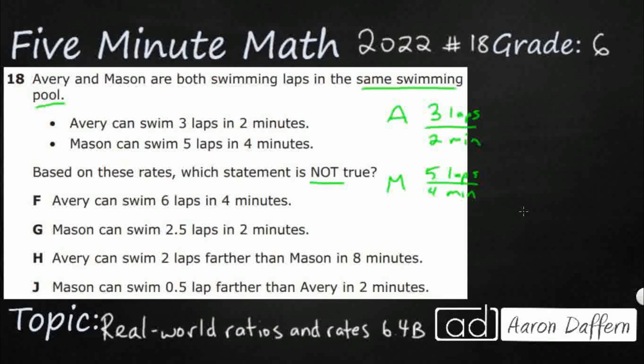Let's look at F. Avery can swim 6 laps in 4 minutes. We're going to take Avery. Can we do 6 laps? I'm going to do an equal sign here, because we've got this rate of 3 laps for every 2 minutes. If we just look at it as pure fractions, 3 halves and 6 fourths, that looks good. You just double it. So that looks true, which means this is the one we don't want. We're looking for a statement that is not true.